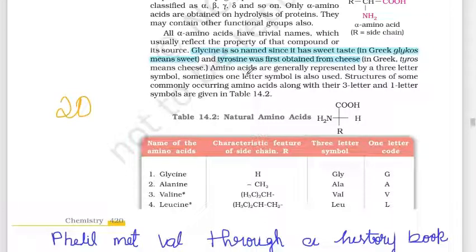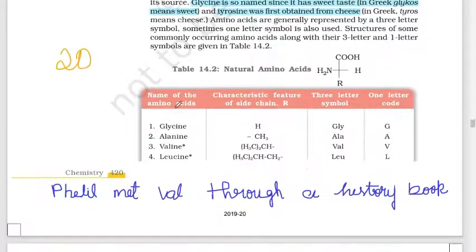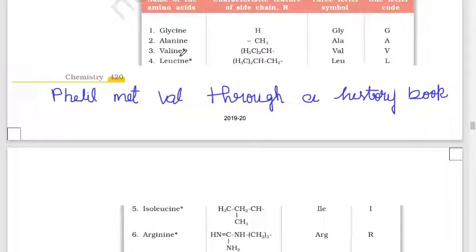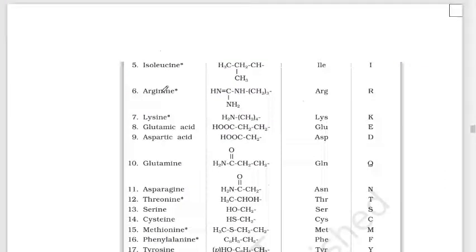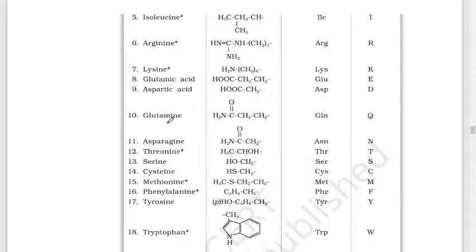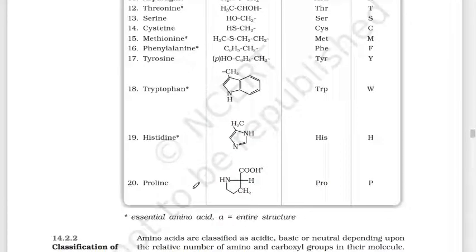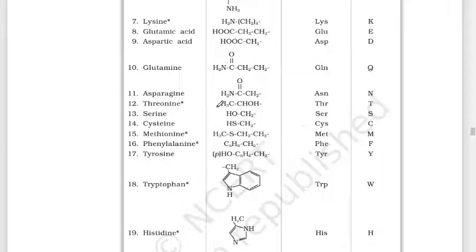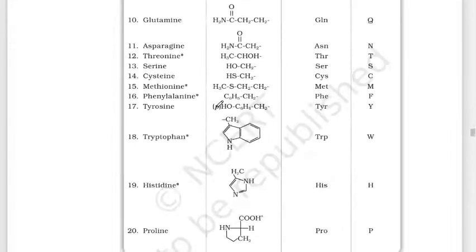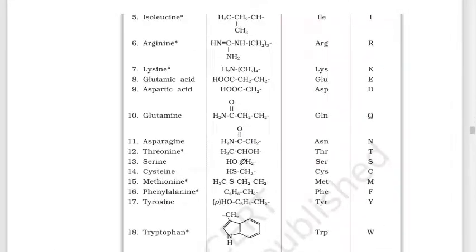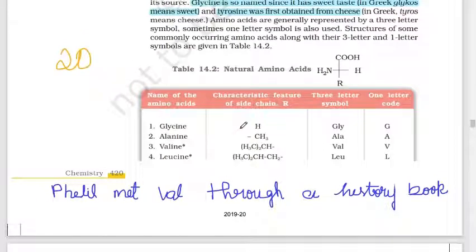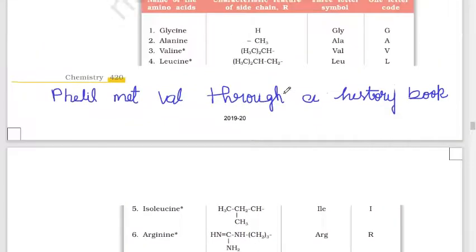The 20 amino acids are: glycine, alanine, valine, leucine, isoleucine, arginine, cysteine, glutamic acid, aspartic acid, glutamine, asparagine, threonine, serine, cysteine, methionine, phenylalanine, tyrosine, tryptophan, histidine, and proline. They can be abbreviated using three-letter symbols — e.g., Gly, Ala, Val, Leu — and also one-letter codes such as G for glycine, A for alanine, V for valine, L for leucine, and K for lysine.